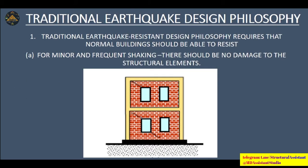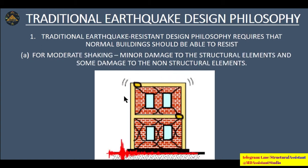Traditionally, earthquake resistant design philosophy requires that a normal building should be able to resist both minor and frequent shaking with no damage to structural elements — here you can see minor cracks in the brick wall but the columns and beams are fine. For moderate shaking, there can be minor damage to structural elements and some damage to non-structural elements — major cracks in the brick wall and small damage at beam-column junctions.